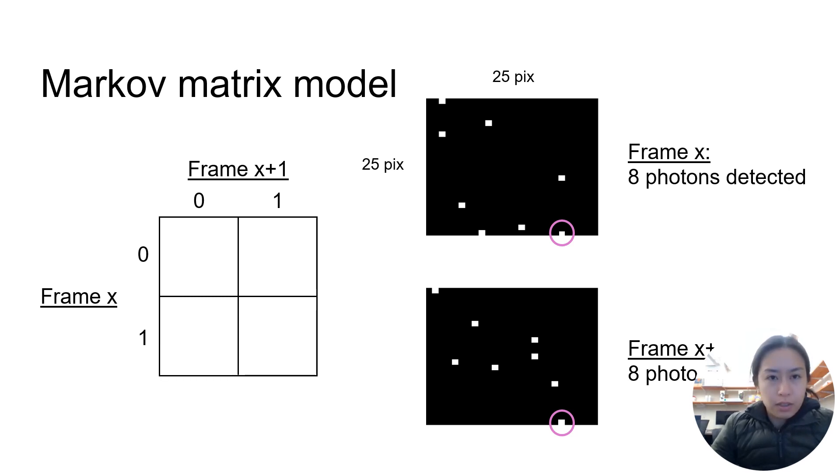Here, most pixels detected no photons in both frames, and exactly seven pixels detected none in the first and one in the second. Another seven detected the converse, and one pixel detected photons in both frames.